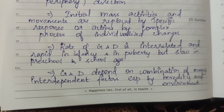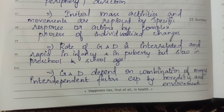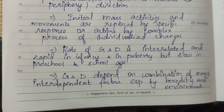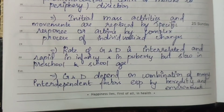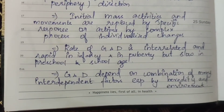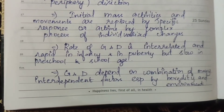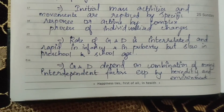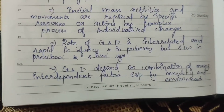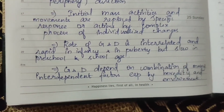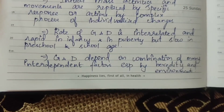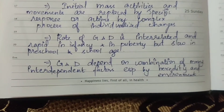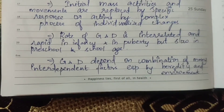The rate of growth and development is interrelated and is rapid in infancy and in puberty, but slow in preschool and school age. Growth and development are interrelated, and milestones are attained in stages — first month, second, third milestone development — and rapid again in puberty age. In the preschool and school age, growth is slower. Growth and development depend on a combination of many interdependent factors, especially heredity.